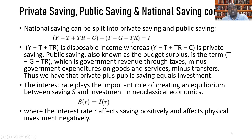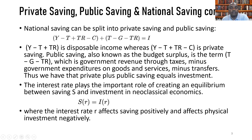Public saving — also known as the budget surplus or deficit — is T minus G minus TR: government revenue through taxes minus government expenditures on goods and services minus transfers. Transfers are those monies given to economic agents without any corresponding economic activity, used to boost aggregate demand in an economy.